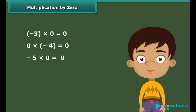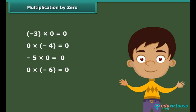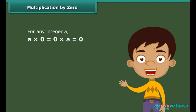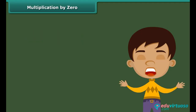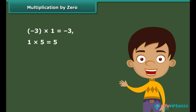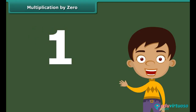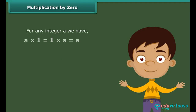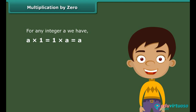Similarly, (−5) times 0 equals 0 and 0 times (−6) equals 0. In general, for any integer A: A times 0 equals 0 times A equals 0. When we multiply 1 with any integer we get the same integer — for example, (−3) times 1 equals −3, and 1 times 5 equals 5. That means 1 is the multiplicative identity for integers. In general, A times 1 equals 1 times A equals A.